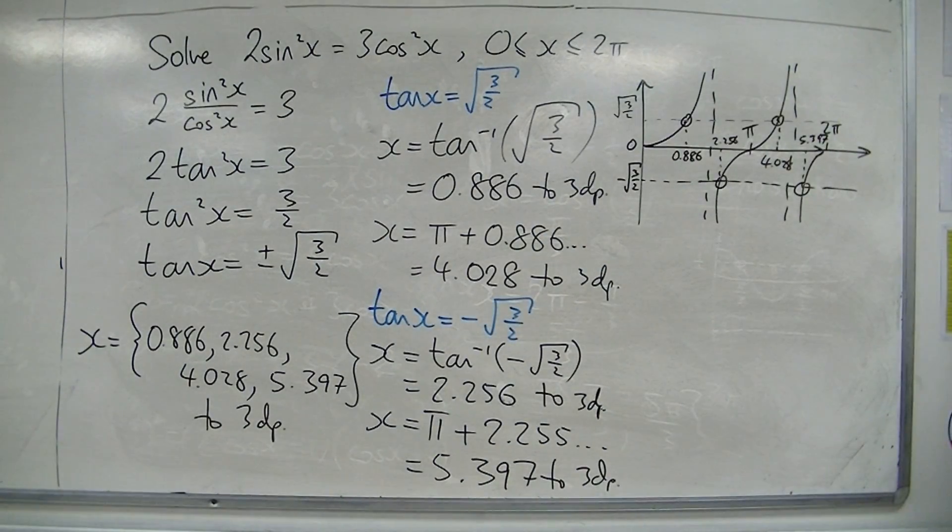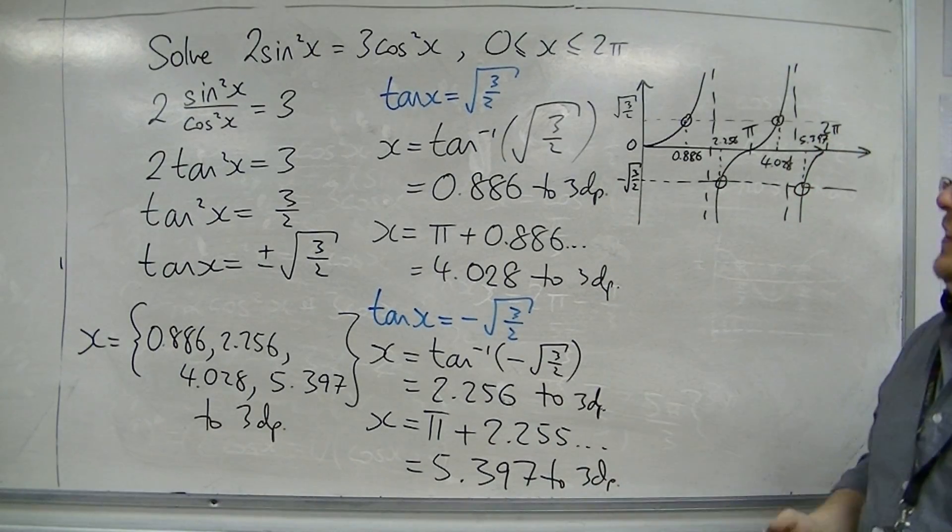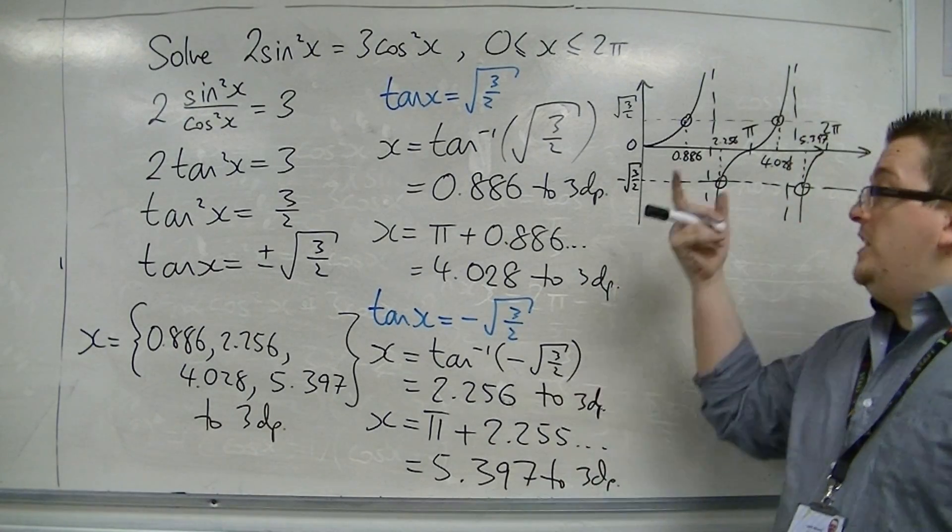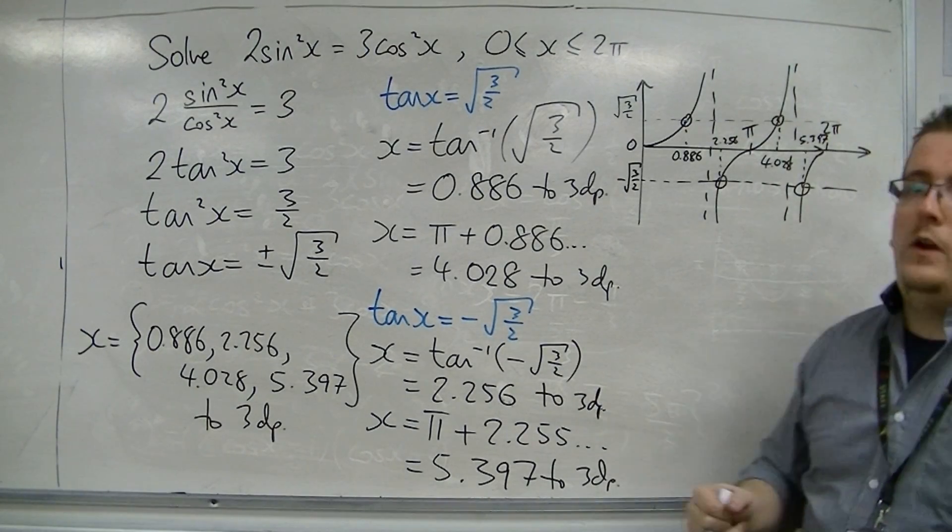You could have solved that in a slightly different way, using the trig identity sin squared plus cos squared equals 1. But you could also go straight into using tan and doing it that way instead.